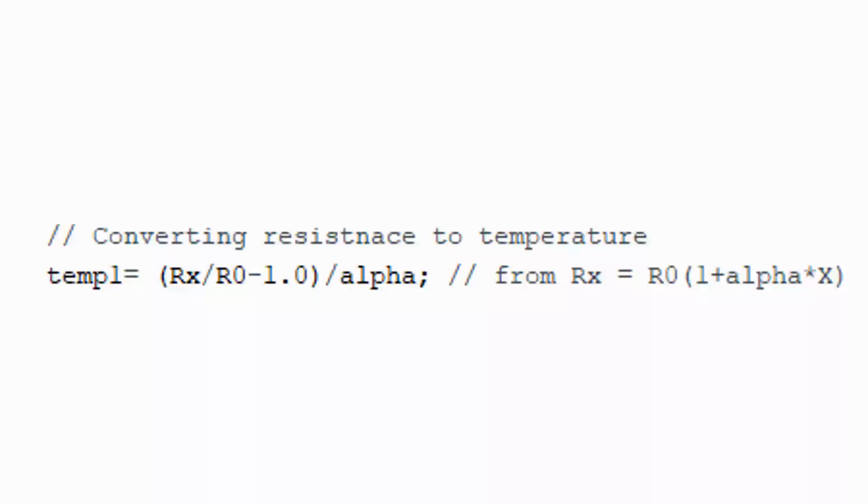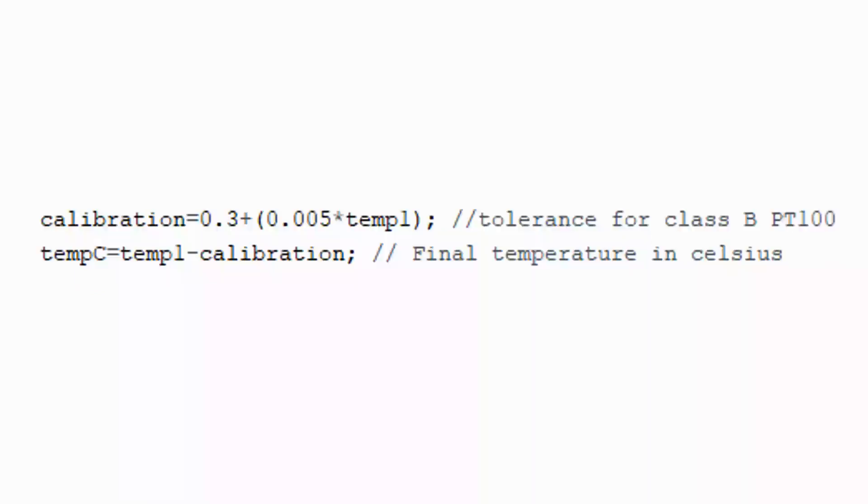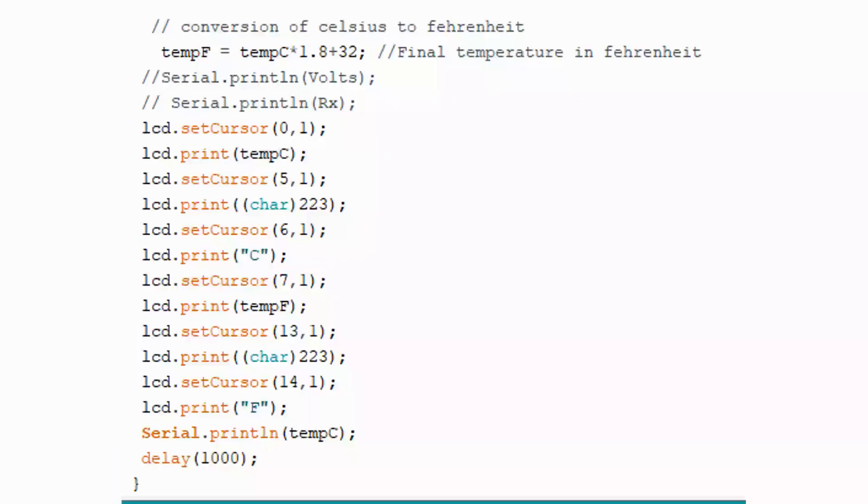Now we have to calibrate this temperature. For calibration we use formula: calibration equals 0.3 plus 0.005 times temp1. This is tolerance for class B PT100. Final temperature (tempC in degrees Celsius) equals temp1 minus calibration. This is the final temperature in Celsius. Also convert Celsius to Fahrenheit using formula: tempF equals tempC times 1.8 plus 32. This is the final temperature in Fahrenheit. After that we display all these values over LCD.